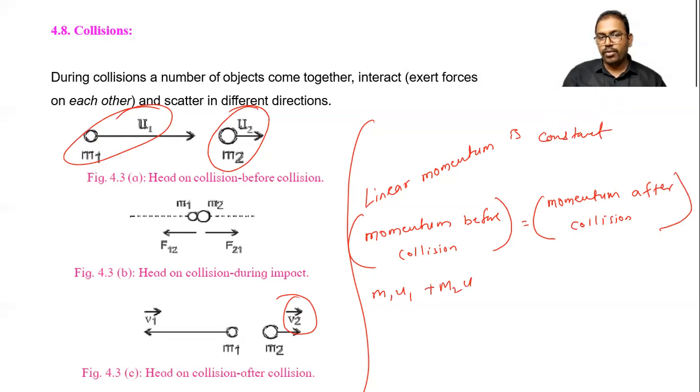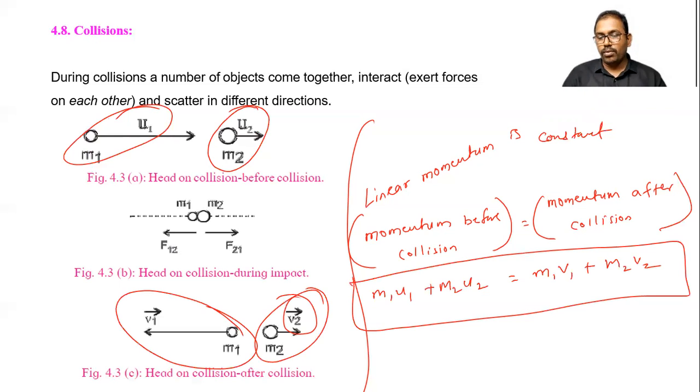And after collision this mass into velocity and plus this mass into velocity. So m1 v1 plus m2 u2. So this is the momentum before collision is equal to momentum after collision. And here we can write linear momentum is constant.